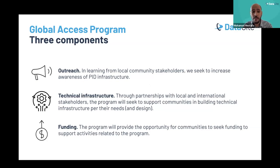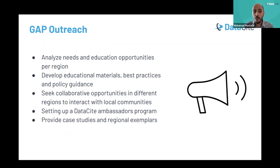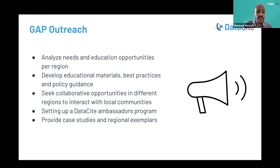DataCite has taken a comprehensive approach with the Global Access Program through three components. The first is outreach: we are analyzing the needs and education opportunities per region, developing educational materials, best practices, and policy guidelines, and seeking collaboration with local communities. We are finalizing the framework and will be launching a DataCite Ambassador Program to build a trusted network of volunteers among the GAP regions, and we are also working on providing case studies and regional examples.